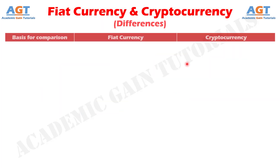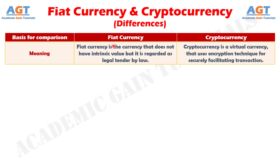Let's look into the basic differences between fiat currency and cryptocurrency in a tabular form. Difference number 1: Fiat currency is the money that the government of a country has established as a legal tender, whereas cryptocurrency refers to a decentralized and digital exchange medium which uses encryption technique to facilitate the transaction.